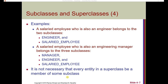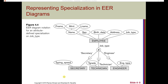It's not necessary that every entity in a superclass be a member of some subclass. This is what's called specialization — we have different specializations characterized by a subclass. A subclass is said to be a specialization of the superclass. We're not going to use a U notation; instead, based on the type of specialization, we'll have a circle with a line coming off the superclass, and then lines out of that circle to the corresponding subclasses.